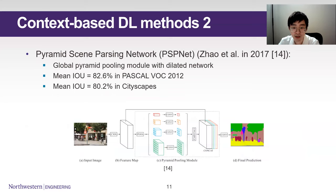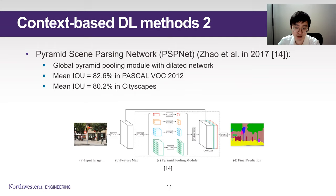Another example is the Pyramid Scene Parsing Network, or PSPNet, in 2017 by Zhao et al. The PSPNet first extracts a feature map using ResNet. It then proposes a pyramid pooling module, which uses four dilated convolutions to pool four different copies of the feature map. The dilation rate decreases from bottom to top, so it is like a pyramid. The four layers then concatenate back with the feature map and produce the output. It achieves a mean IOU of 82.6% on the Pascal 2012 dataset.